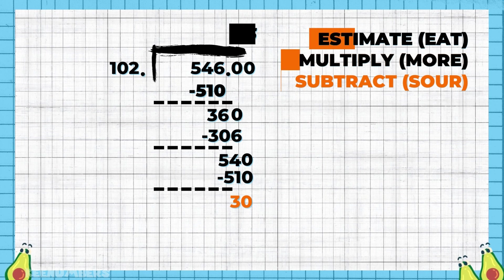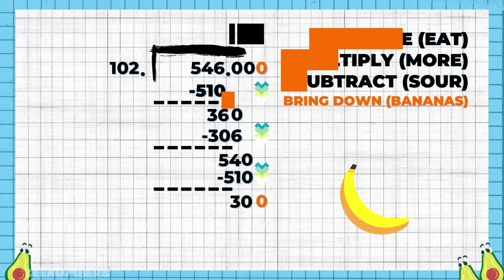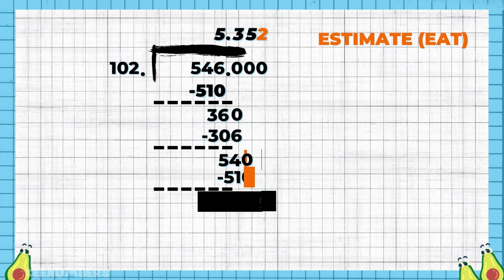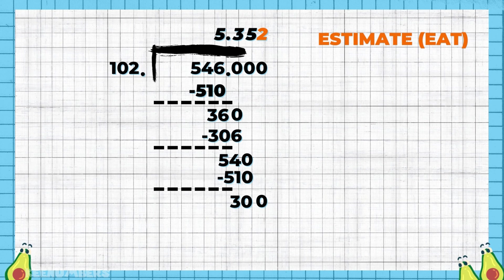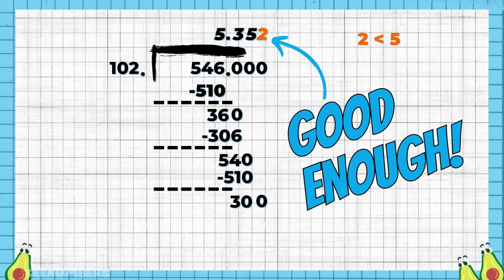Eat more sour bananas - bring down again because you have as many zeros as you want once that decimal is fixed. Bring down the zero. 102, well, multiples would be 204, 306 - that's too big because we're looking at 300. So we estimate it only goes in two times. Two is less than five, so that's good enough for us to round down and say 5.35.